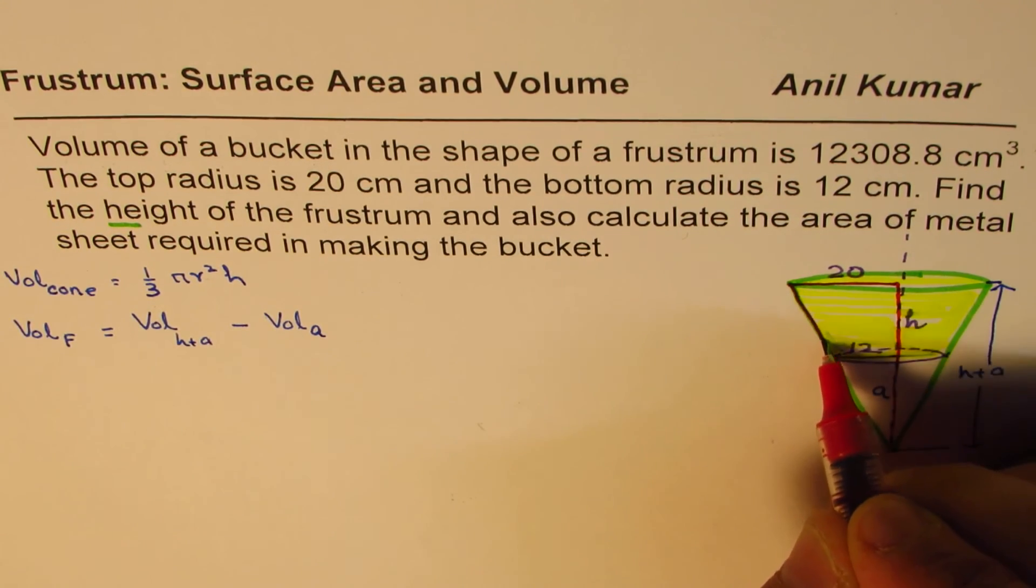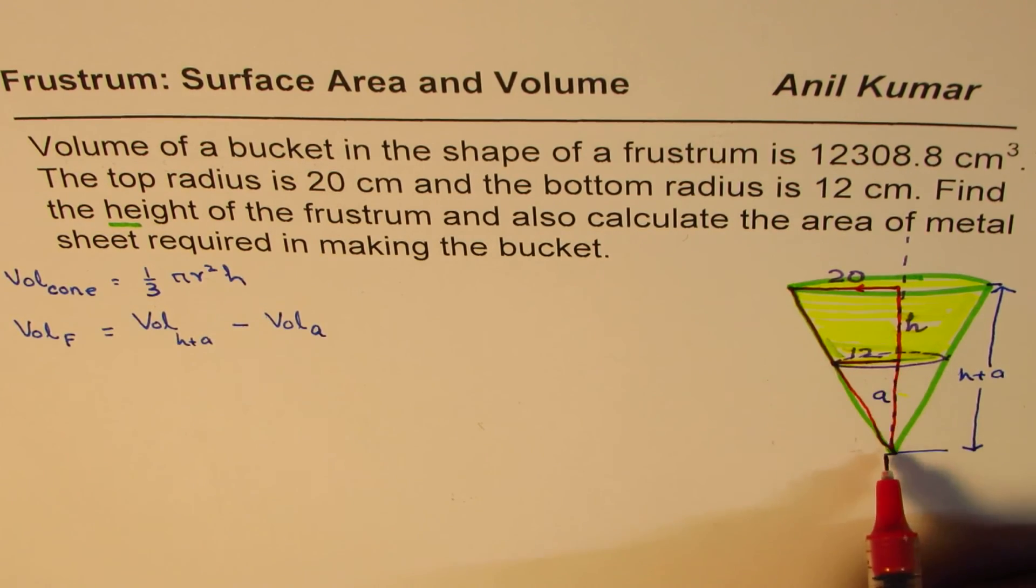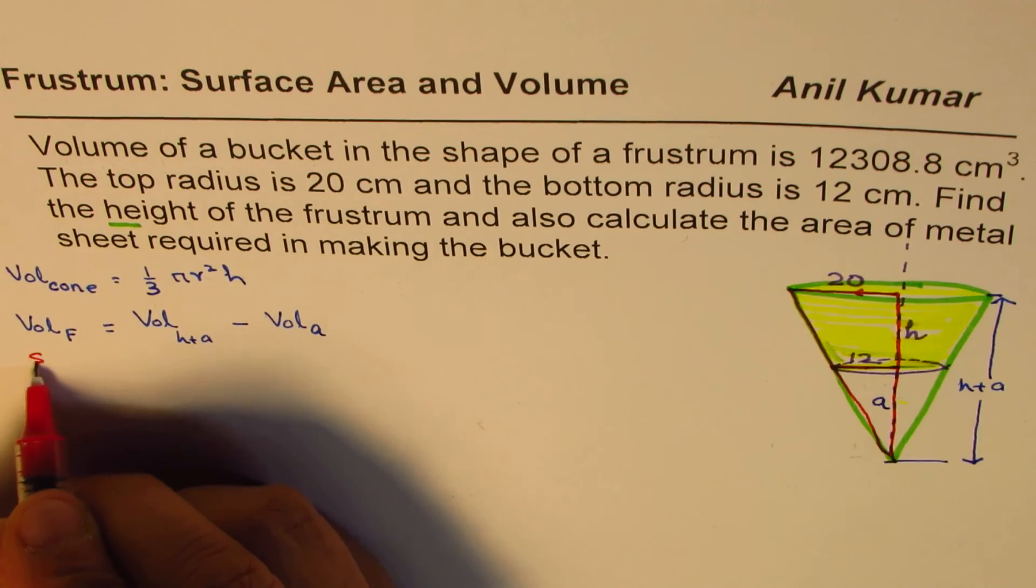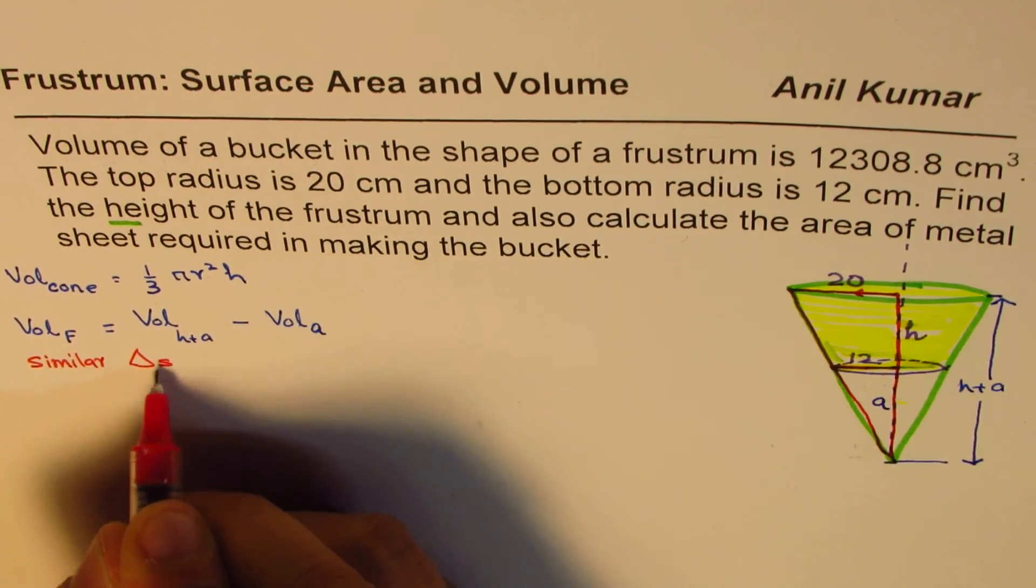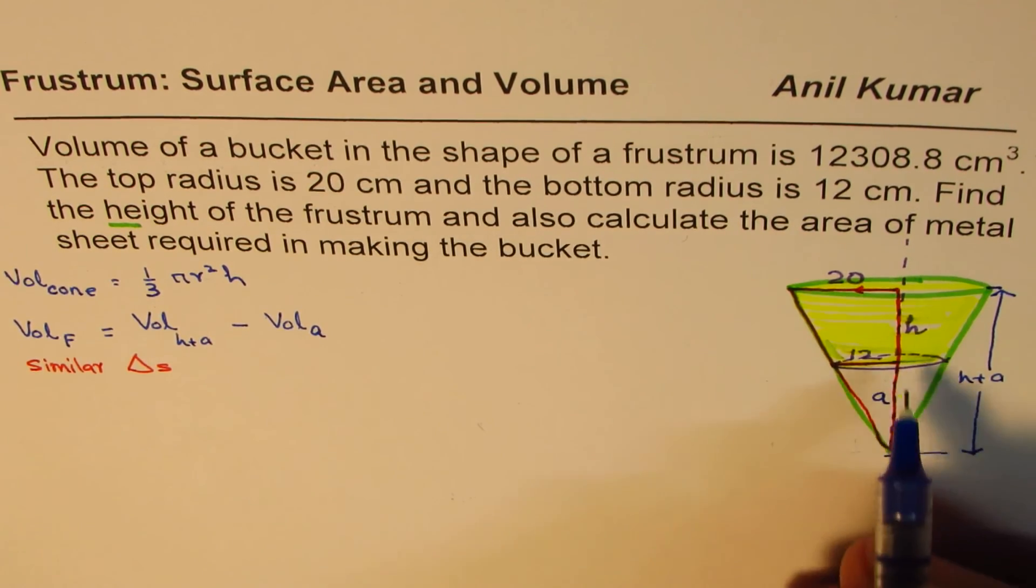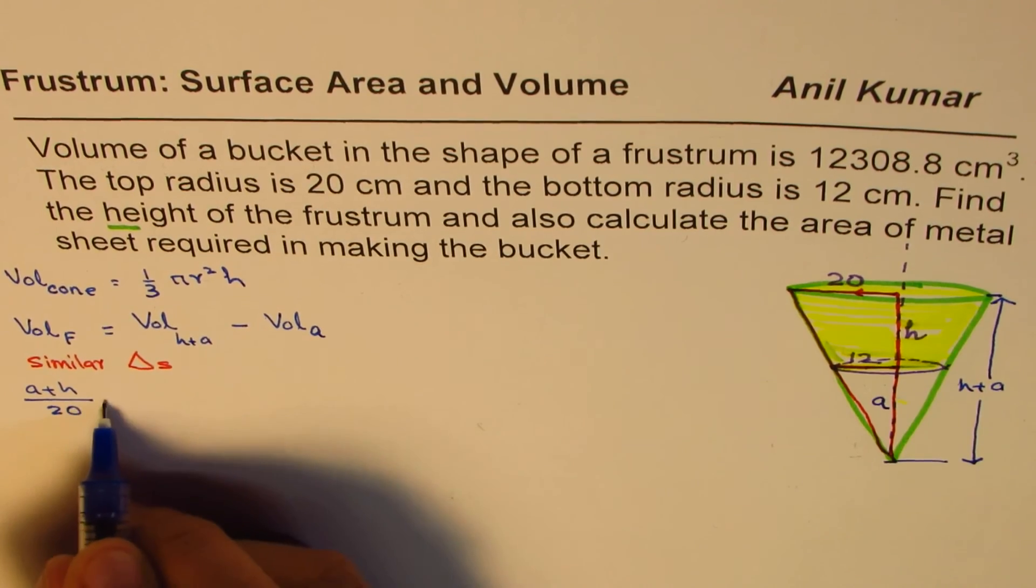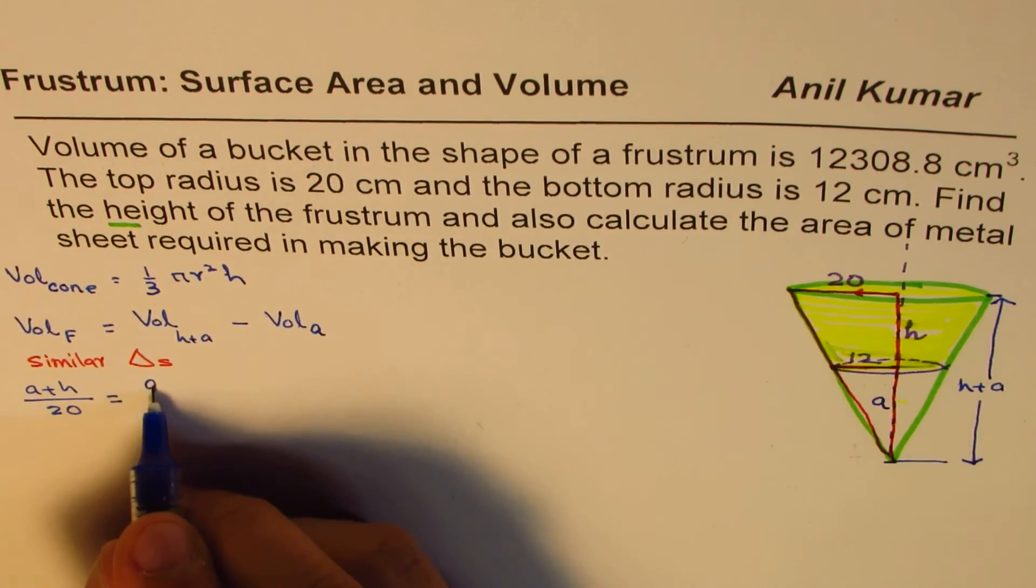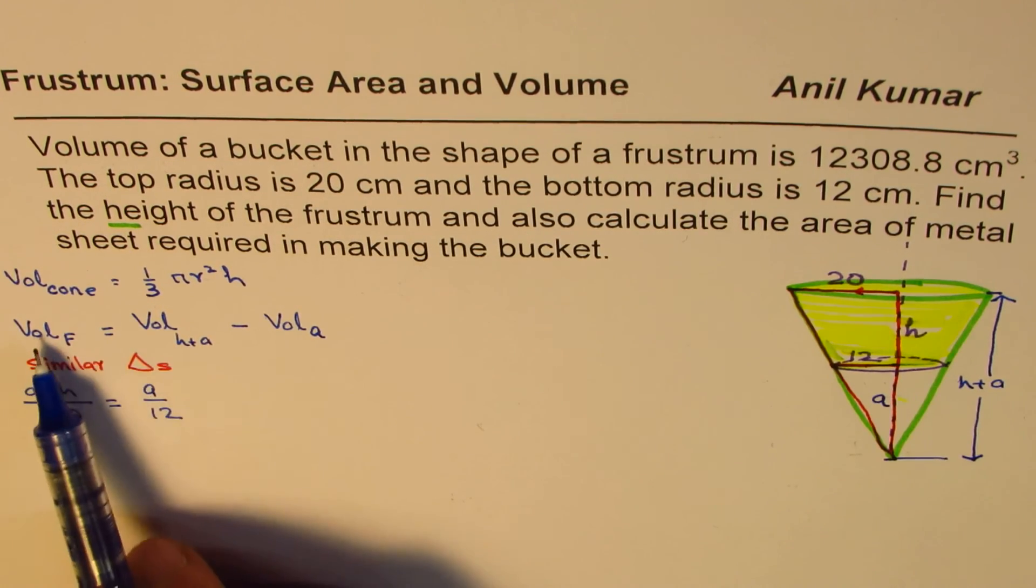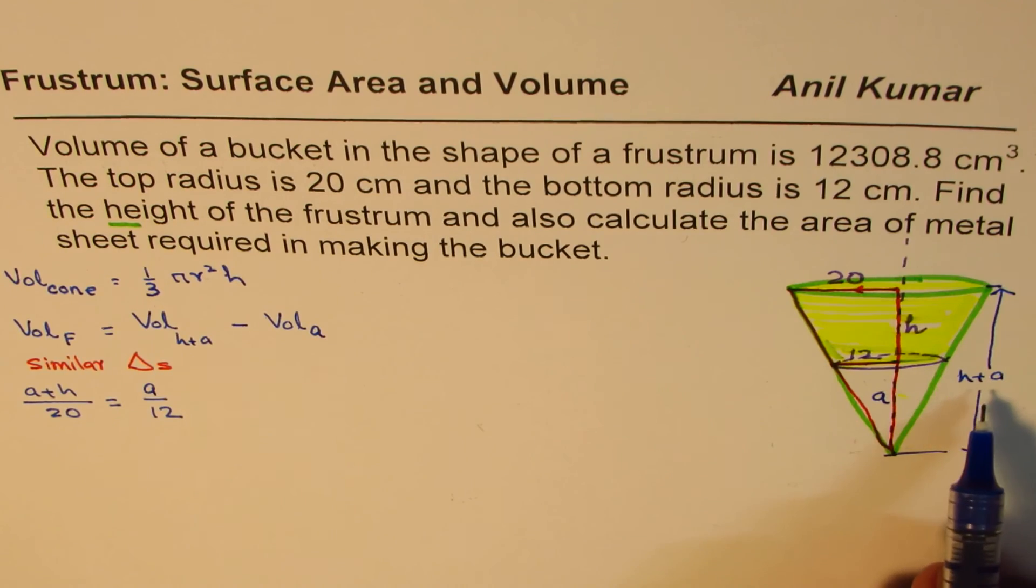Since we have here similar triangles, we're using the concept of similar triangles to find the relation between height H and A. Look into this triangle now, big triangle. I'm drawing a line here, this line is parallel to this. So this big triangle is similar to the small triangle. Since they are similar, we can use the properties of similar triangles. In similar triangles, the ratios of the sides are constant. So big triangle height is A plus H, over 20, should equal small triangle A over 12.